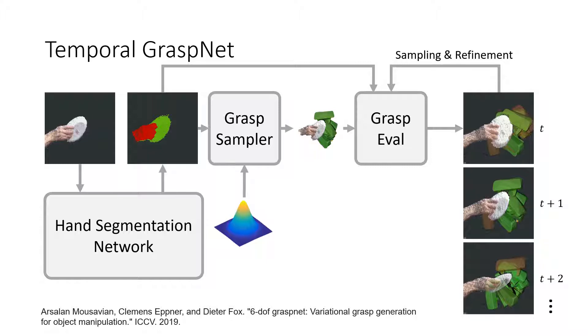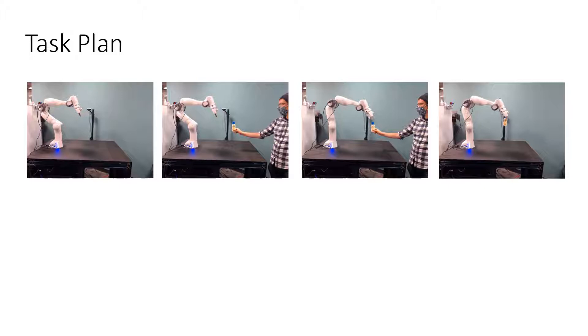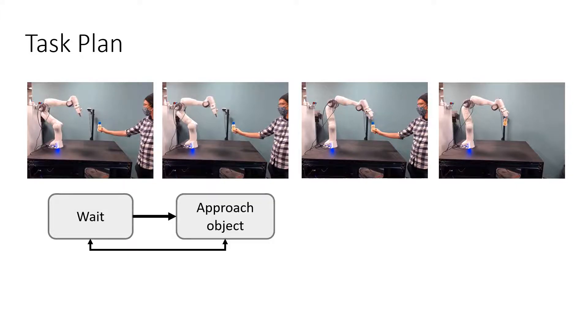Next, Chris will introduce the reactive task planning. We represent the task of human to robot handover through four distinct phases. First, the robot will wait until the human arrives and presents to it an object.